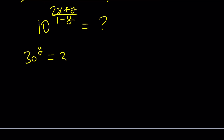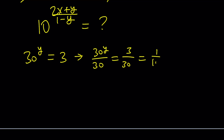Since we need 1 minus y and 2x plus y, let's evaluate 1 minus y first. Starting with 30 to the power y equals 3, if we divide both sides by 30, we get 30 to the power y minus 1 equals 3 over 30, which is 1 tenth. So 30 to the power y minus 1 equals 10 to the power negative 1. Taking the opposite gives us the 1 minus y we need.